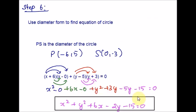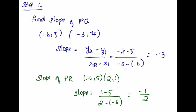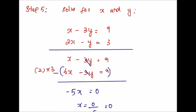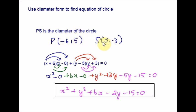So we got the equation of the circle using the diameter form. We found the slopes and perpendicular slopes, used the one-point formula to get two equations, solved them to get point S, and then used the diameter form with P and S to find the equation of the circle. Hope you are clear with Method 4. Now let us move on to Method 5.